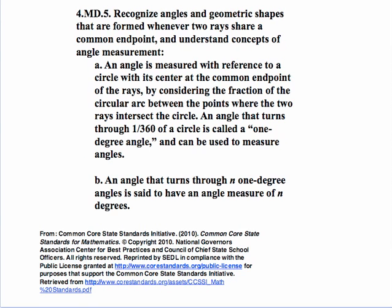Part A: An angle is measured with reference to a circle with its center at the common endpoint of the rays by considering the fraction of the circular arc between the points where the two rays intersect the circle. An angle that turns through 1/360th of a circle is called a 1 degree angle and can be used to measure angles.